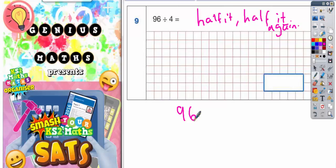So if you half 96, well, half of 90 is 45 and half of 6 is 3. So half of 96 must be the 45 and the 3 together, which would make 48.